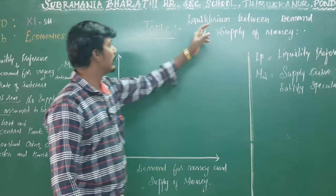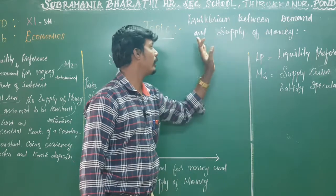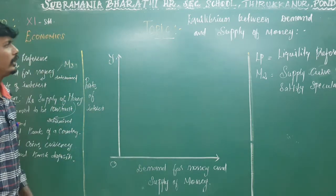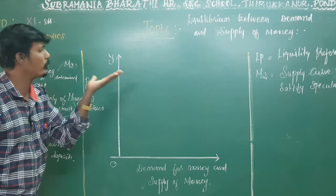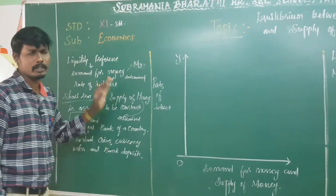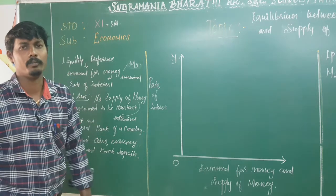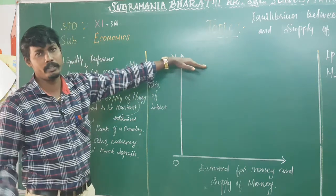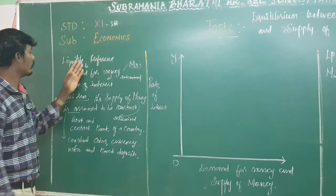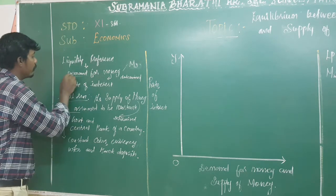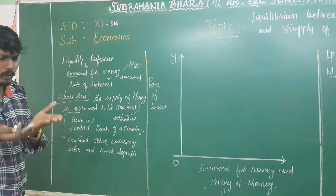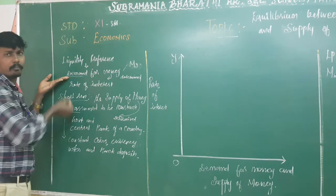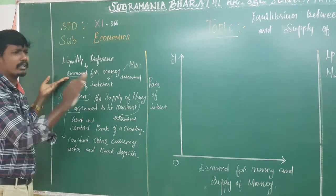We are going to discuss about the determination of equilibrium between the demand and supply of money. The idea is the liquidity preference theory of interest — how are the demand side and supply side determined?